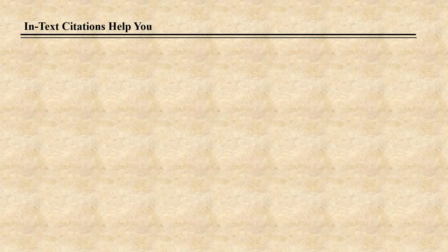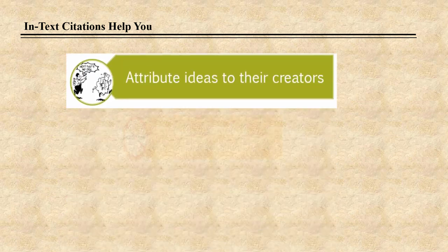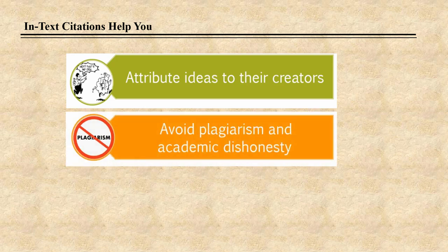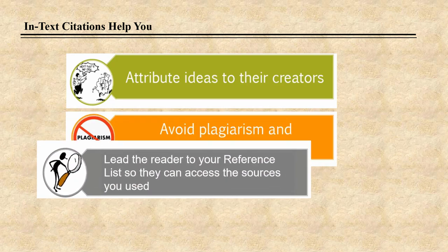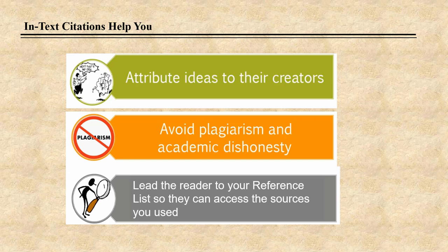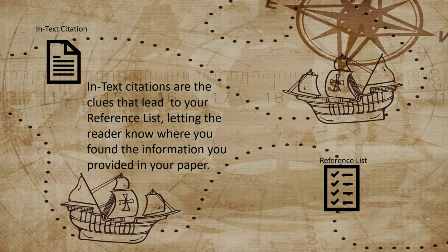Proper citation is extremely important. Citations attribute ideas to their creators, help to avoid plagiarism and academic dishonesty, and allow others to access the sources you have used. Every idea or piece of information you receive from another source must be cited, whether it is a direct quote or paraphrase of something you have read. In-text citations are the clues that lead your reader to the full citations on your reference list, which allow your reader to locate the information you quoted in your paper.